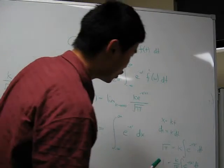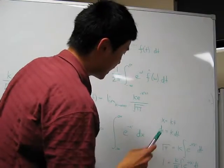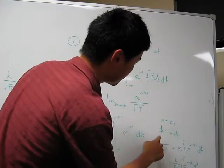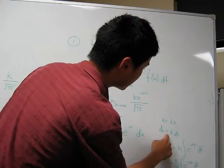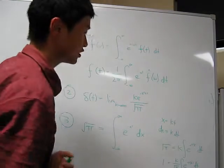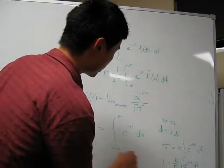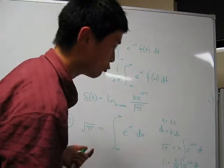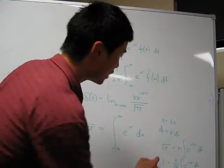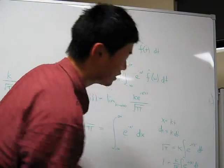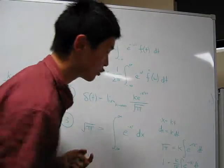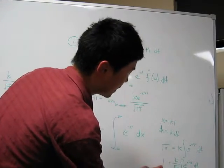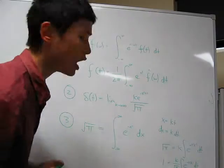Now notice how we can perform a change of variables such that dx equals k dt. So we can re-express this integral accordingly. And if we divide both sides by the square root of π, we get an integral from negative infinity to positive infinity that equals 1.